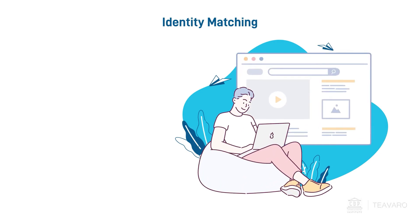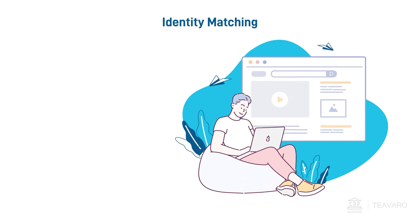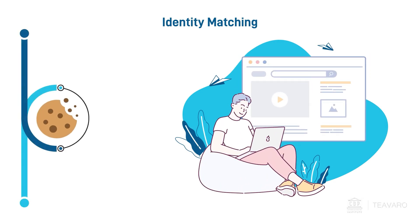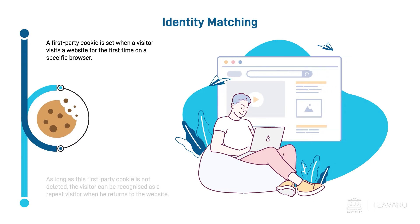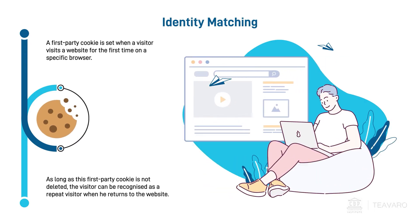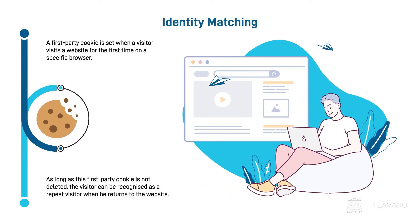When a visitor comes to your website for the first time on a specific browser, a first-party cookie is set. As long as this first-party cookie is not deleted, the visitor can be recognised as a repeat visitor when he comes back to the website.